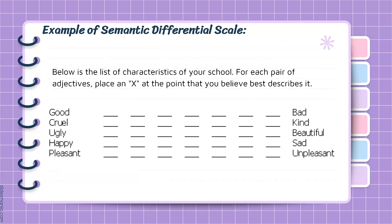Below is a list of activities or characteristics of your school. For each pair of adjectives, place an X at the point that you believe best describes it. This is an example of a semantic differential scale with bipolar adjective pairs: good/bad, cruel/kind, ugly/beautiful, happy/sad, and pleasant/unpleasant.